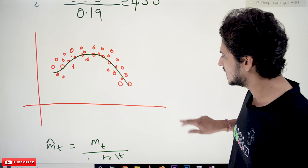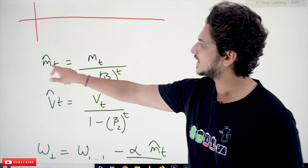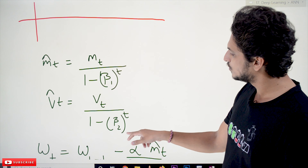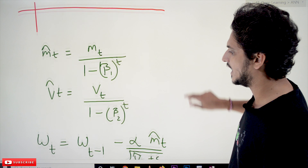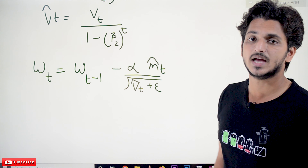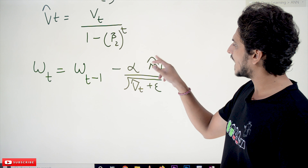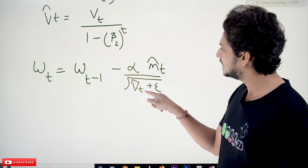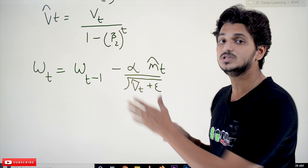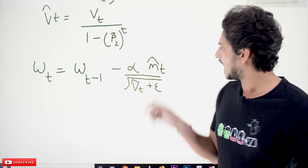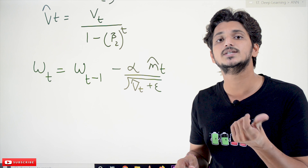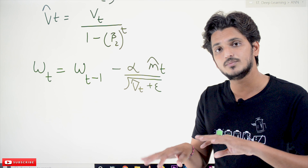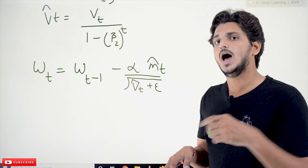The same concept is applied in Adam. We calculate Mt and Vt, then apply bias correction: Mt_cap = Mt / (1 - Beta1^t) and Vt_cap = Vt / (1 - Beta2^t). The final weight update equation for Adam is: Wt = Wt-1 - alpha * Mt_cap / (sqrt(Vt_cap) + epsilon). The term alpha / (sqrt(Vt_cap) + epsilon) is the dynamic learning rate from AdaDelta, and Mt_cap is the momentum term from SGD with Momentum. Adam combines both concepts.